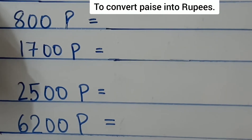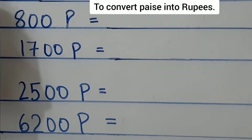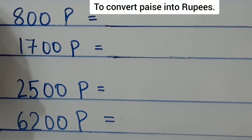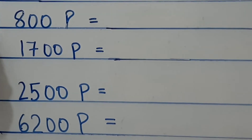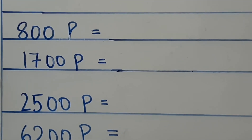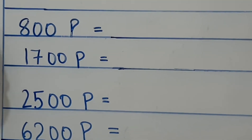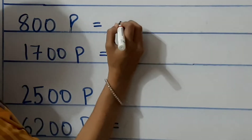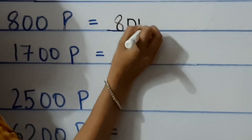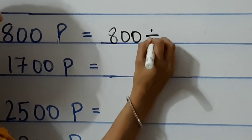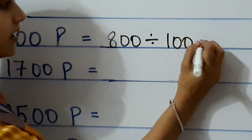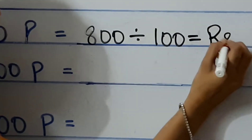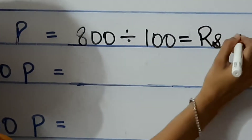To convert paise into rupees, we divide it by 100. Look here children — 800 paise. To convert 800 paise into rupees, we divide it by 100. 800 divided by 100 is equal to rupees 8.